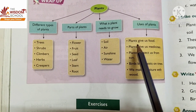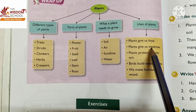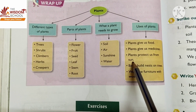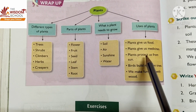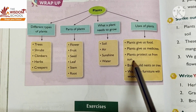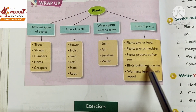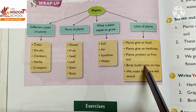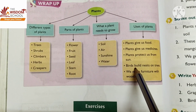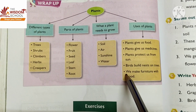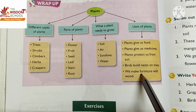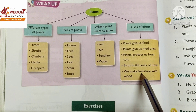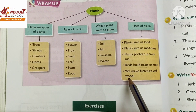Plants give us medicines — plants se hume medicines milti hai. Plants protect us from sun. Birds build nests on trees. We make furniture with wood — hum furniture kis se banate hai, with the help of wood.